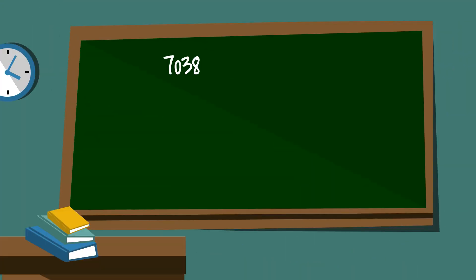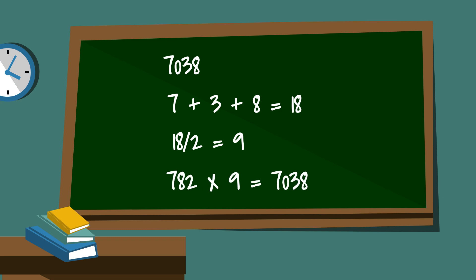And finally, 7038. Add the digits together: 7 plus 0 plus 3 plus 8 is 18, and 18 is divisible by 9. So 7038 is divisible by 9. 782 times 9 is 7038.